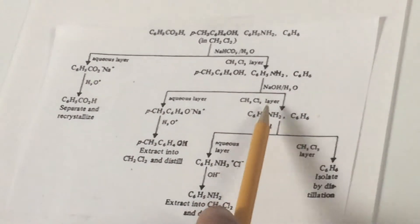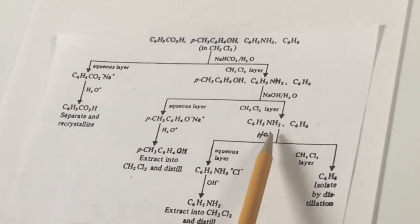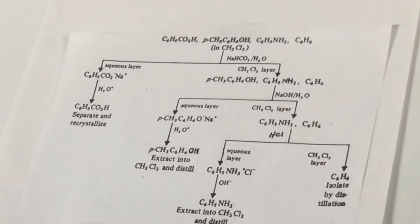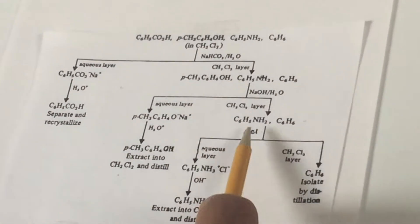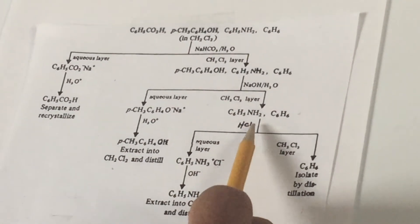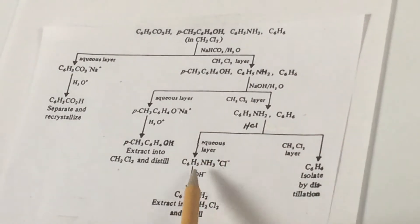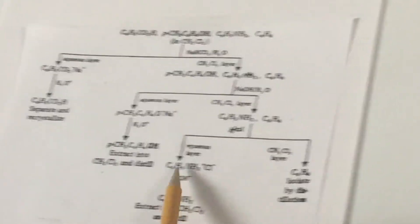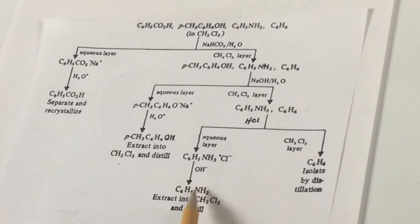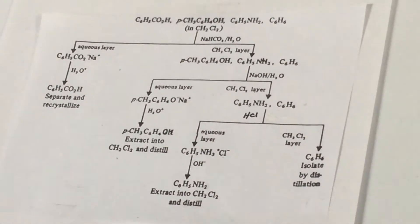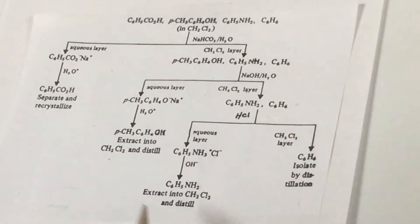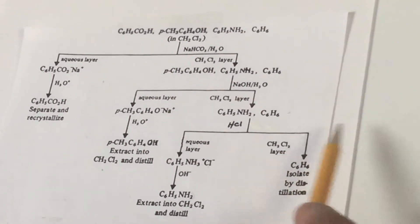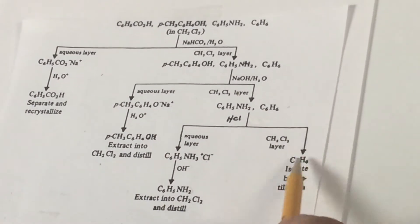Now there are two compounds left. We're going to treat this with HCl. HCl would be used to separate an amine. Amines are bases — because they're bases, they're going to react with the aqueous acid and go into the aqueous layer as the alkylammonium salt. Once we get the alkylammonium salt, we add base to it, and that generates back the aniline. Extract into the dichloromethane and distill it. Once we got that, our final compound is benzene.